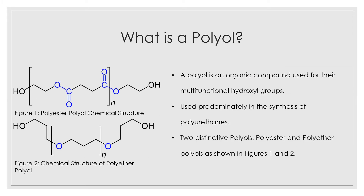First, we must answer the question of what is a polyol. Polyols have a vast variety of use in the polymer industry, and this variety varies widely on the intended application of polyurethanes. These organic compounds are used for their multifunctional hydroxyl groups when reacting with polyisocyanates. As you can see in figures one and two, these are the two distinctive types of polyols: polyether polyols and polyester polyols. These two break down according to their end use — as the molecular weight of the polymer increases, the flexibility increases. Lower molecular weight provides more rigidity applications.